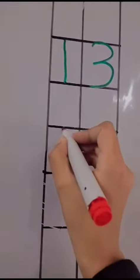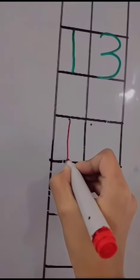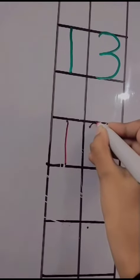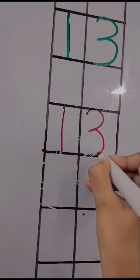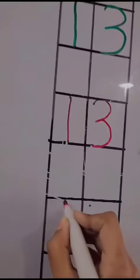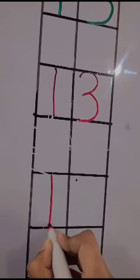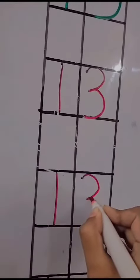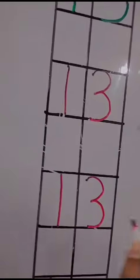Write 13. Put your pencil on dot, make a standing line. 1. Put your pencil on another dot, make a half circle and again half circle. Put your pencil on dot, make a standing line for 1. Make a half circle and again half circle. 1, 3, 13.